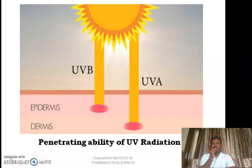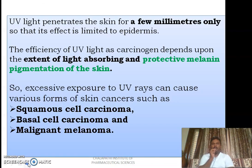UVA radiation will penetrate up to your dermis and UVB radiation will penetrate up to the epidermis. UV radiation has a penetrating ability of just a few millimeters only. The efficiency of UV radiation to cause cancer depends on two things: the extent of light absorbing capacity of the individual's skin, and the protective melanin pigmentation of the skin.